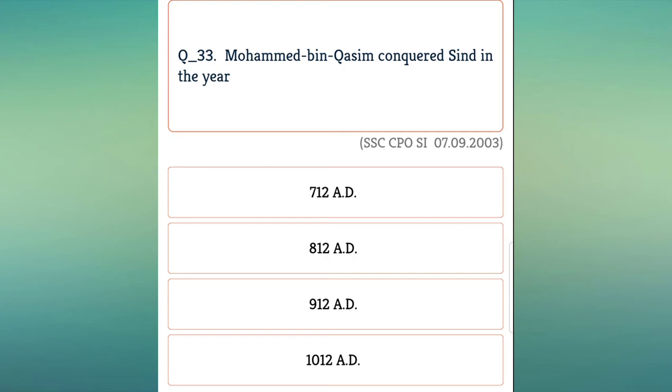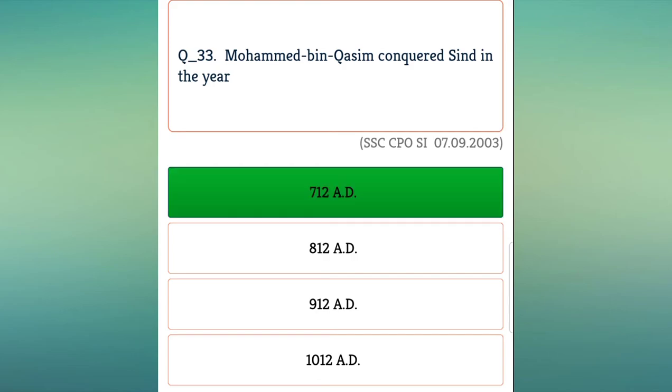Muhammad bin Qasim conquered Sindh in which year? The answer is 712 AD.